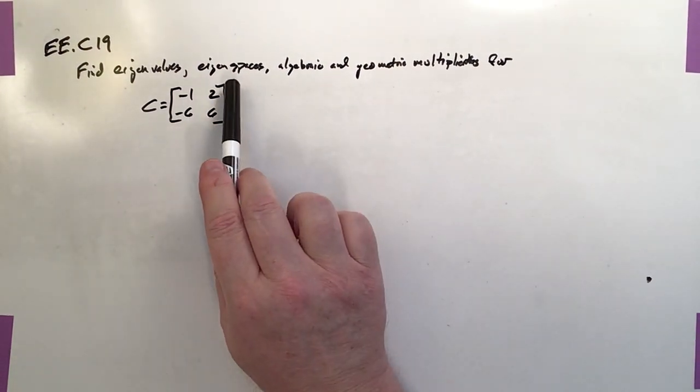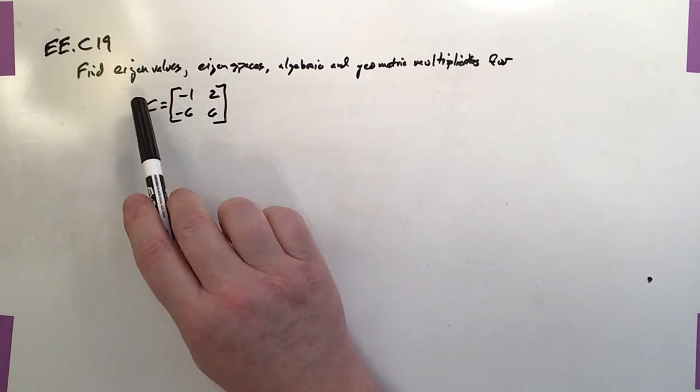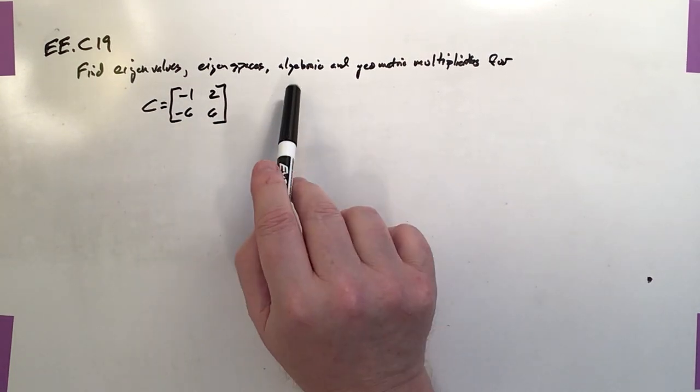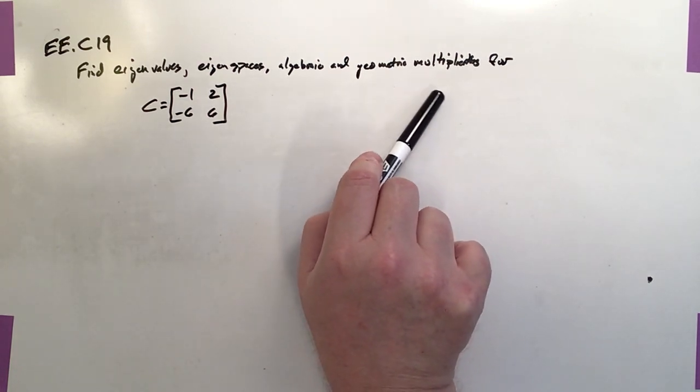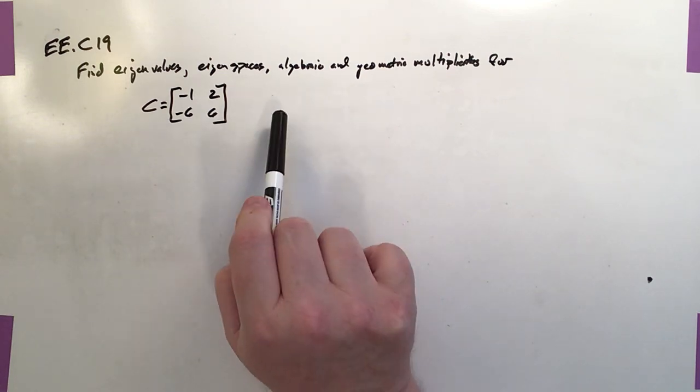The eigenvalues, the eigenspaces, which would be the particular eigenvectors that correspond to these eigenvalues, and then the algebraic and geometric multiplicities, which basically indicate the dimensions of the eigenspaces.